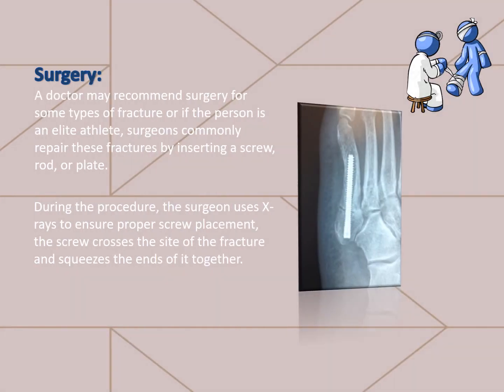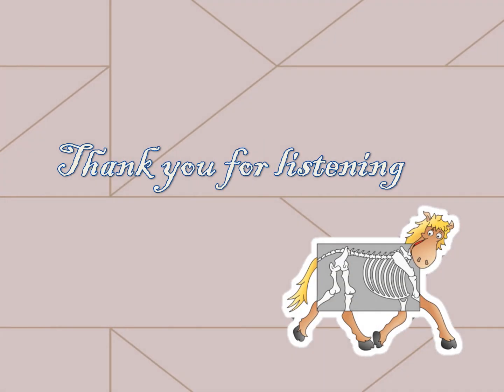Surgery. A doctor may recommend surgery for some types of fracture or if the person is an elite athlete. Surgeons commonly repair these fractures by inserting a screw, rod or plate. During the procedure, the surgeon uses X-rays to ensure proper screw placement. The screw crosses the site of fracture and squeezes the ends of it together. And here we reach the end of our presentation. Thank you for listening.